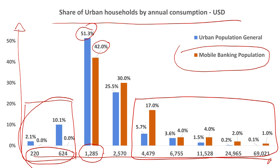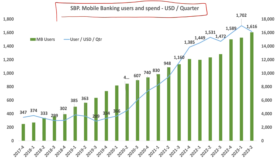Can we validate this data by cross-referencing against other sources? The answer is yes. We move to the State Bank's payment system report — a quarterly and annually published report that tracks mobile banking users and their quarterly spend. It shows a trend of spending patterns from 2017 to 30 June 2023.